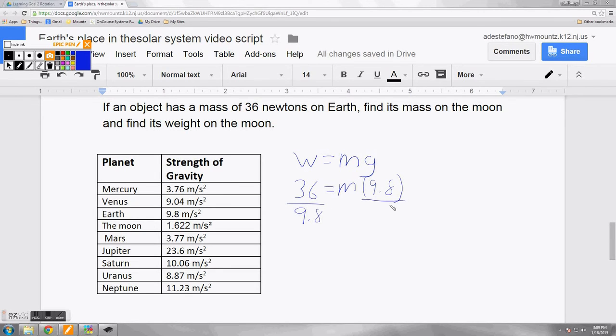Again, use our simple algebra, divide both sides by 9.8. So we're going to do 36 divided by 9.8, giving us 3.67 kilograms equal to the mass. So now we know the mass of the object on Earth.